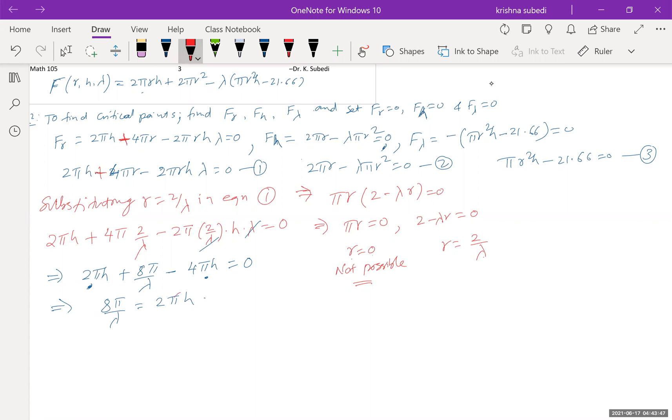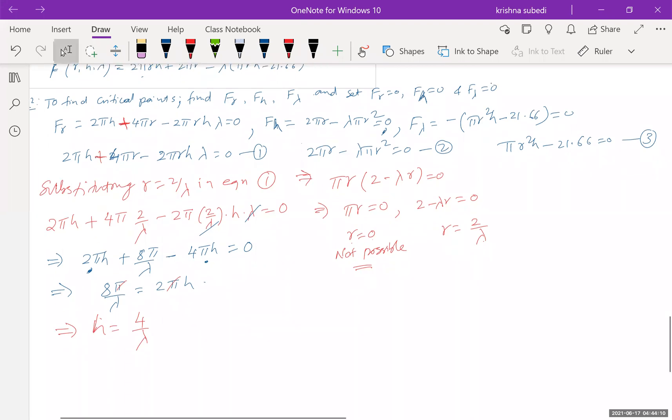So this gives me 8 pi over lambda equals, they are like terms. This one and this one are like terms. If we combine them, you're going to get 2 pi h negative. And I'm going to take that 2 pi h negative on the right hand side. You simply get 2 pi h. So you can cancel this pi and pi. So what you got here is that h equals 4 over lambda.